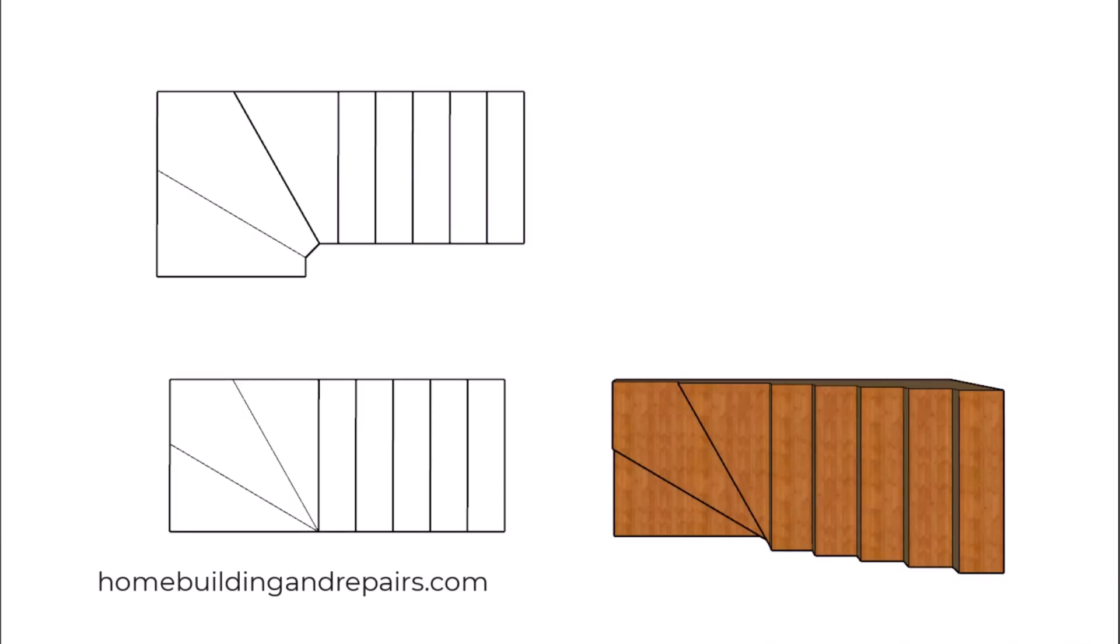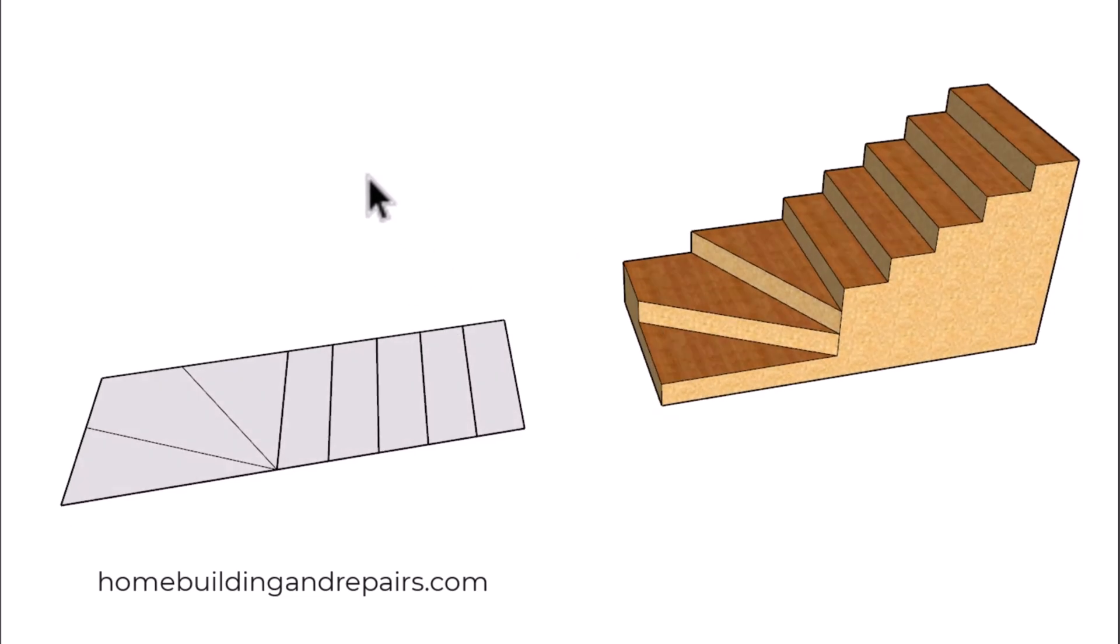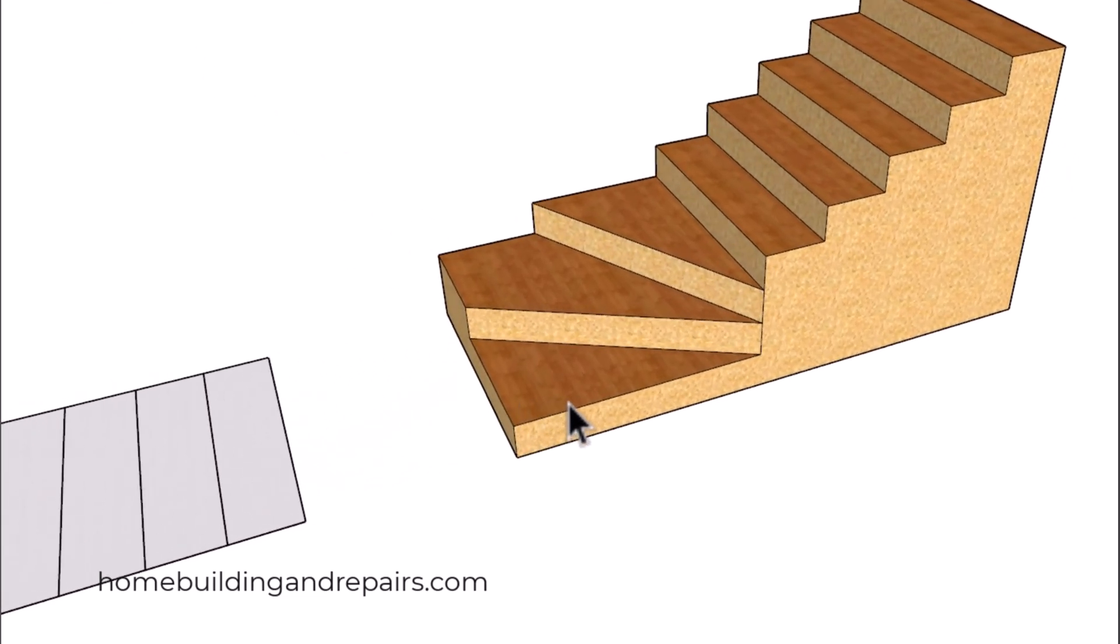Next up, let's take a look at how the layout for the nosing might work with having these steps for a winder that die into the center point here. Keep in mind that some building codes still allow this. However, this is actually the design that the newer building codes would suggest to increase safety. You can apply the same principles that I'm going to share with you here to this one.